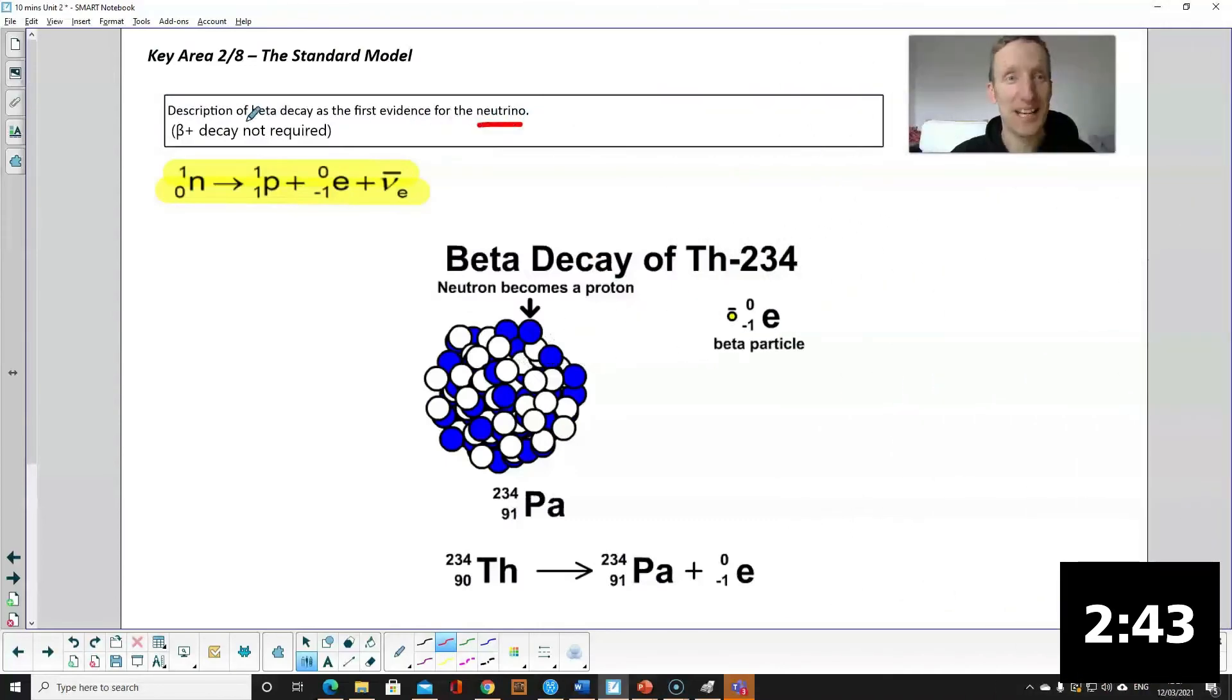Evidence for the neutrino is beta decay. In beta decay a neutron splits into a proton and an electron and when they added up all the mass and the energy they realized something was missing and they discovered the neutrino which is a tiny particle little mass and no charge.